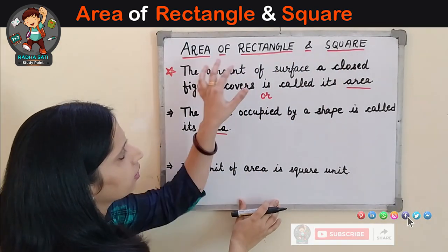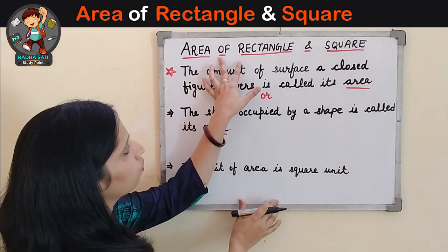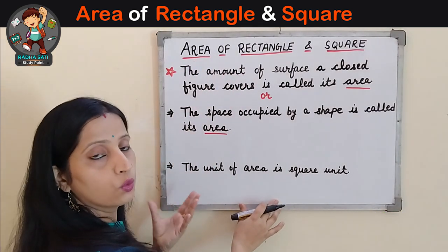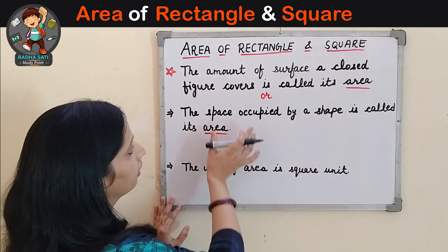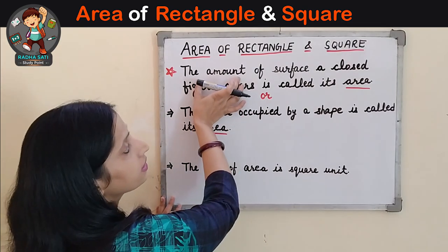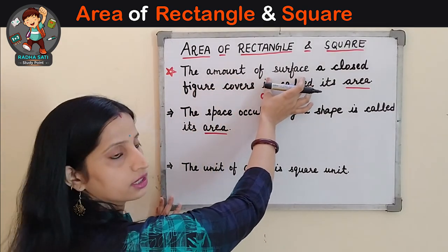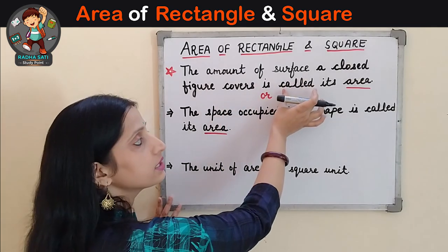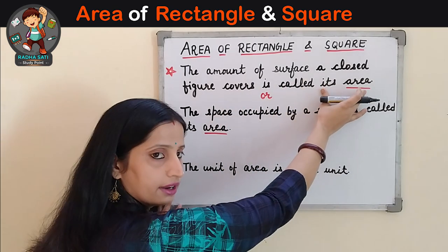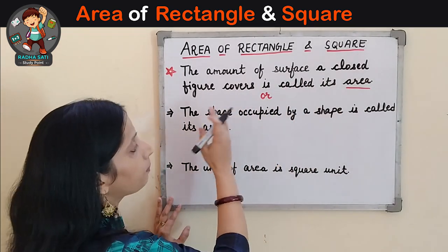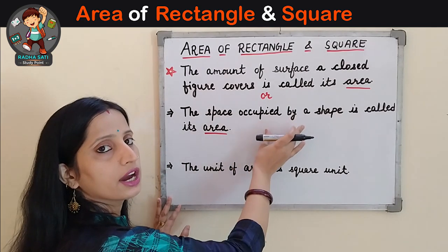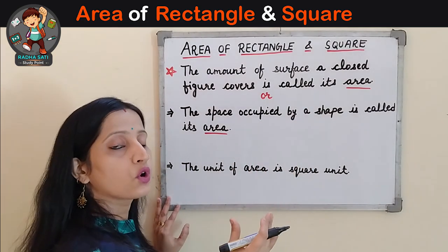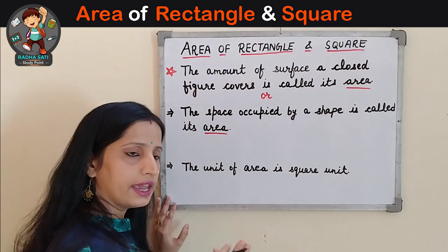Before I start, first we need to learn the meaning of the term area. What is an area? Area is the amount of surface. A closed figure covers its area, or the space occupied by a closed figure of any shape is called its area.